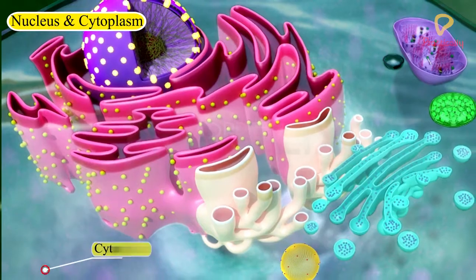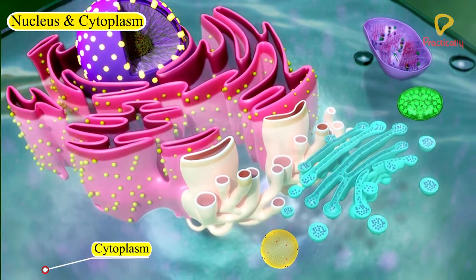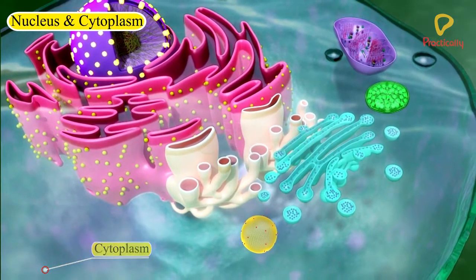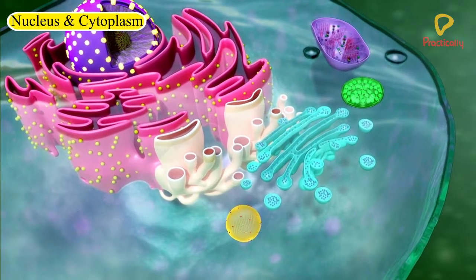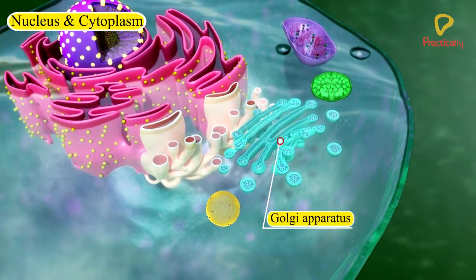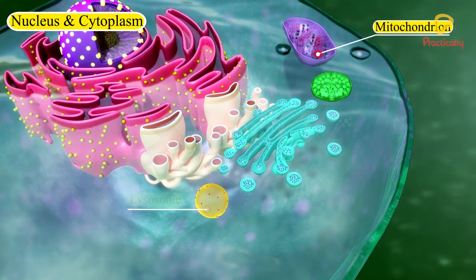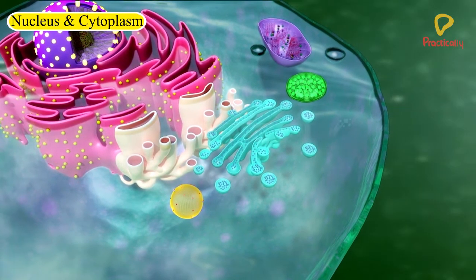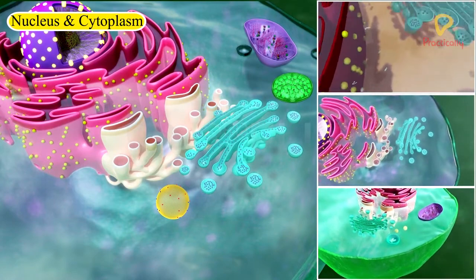The cytoplasm is the fluid content inside the plasma membrane. It is about 80% water and usually colourless. It also contains many specialised cell organelles such as endoplasmic reticulum, Golgi apparatus, lysosomes, mitochondria and plastids. Each of these organelles is enclosed by membranes and performs a specific function for the cell.